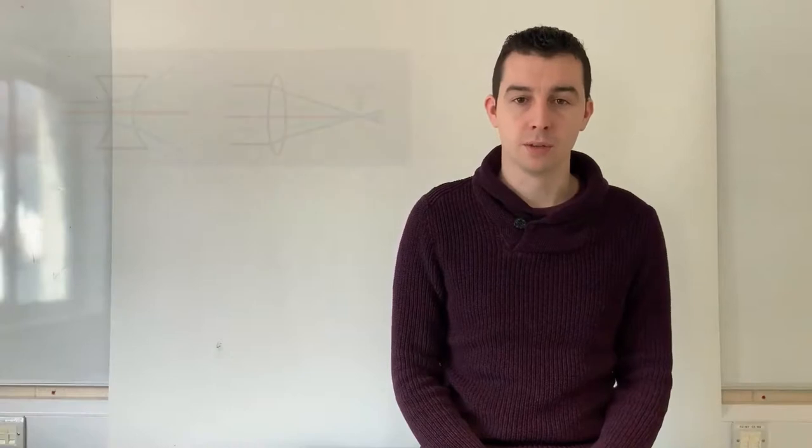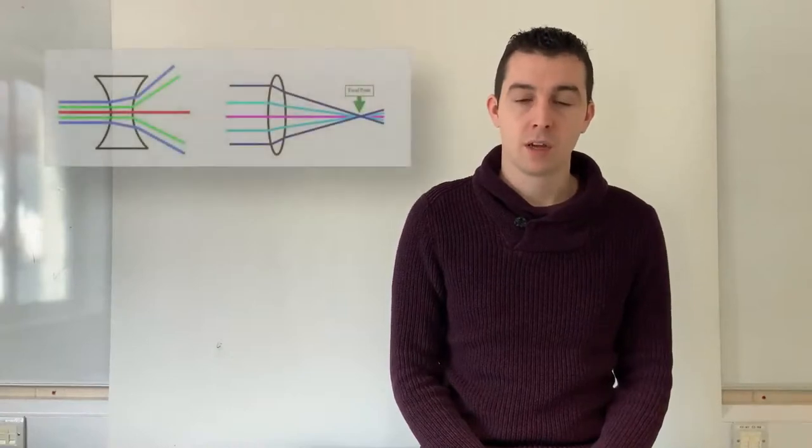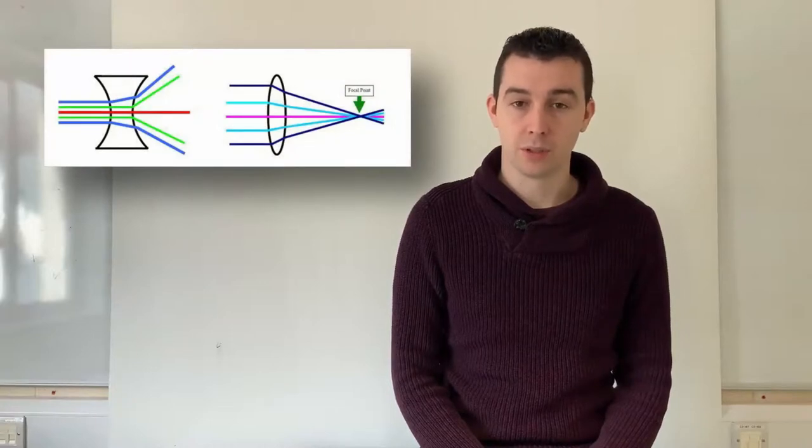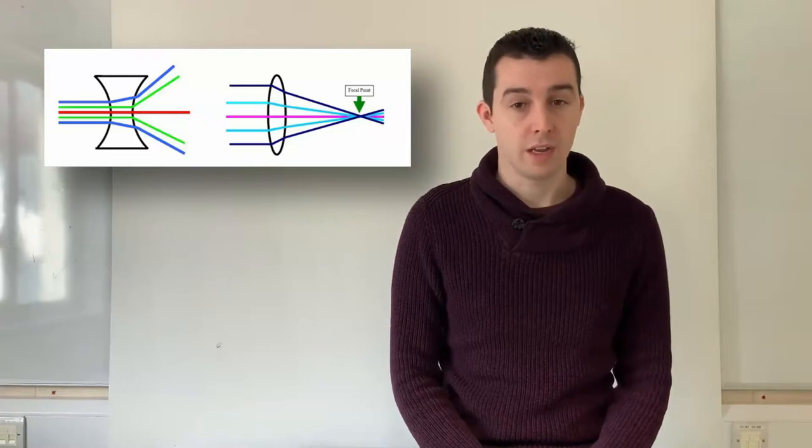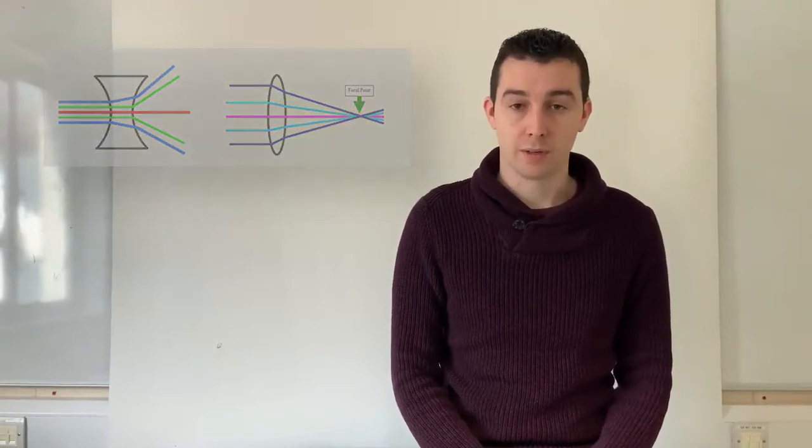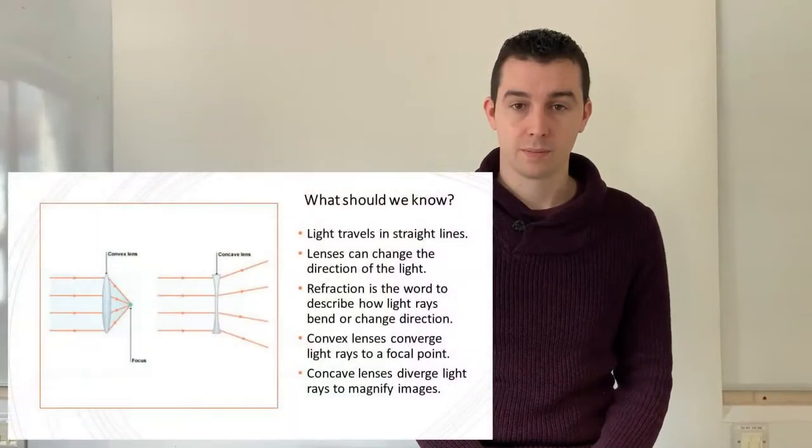In conclusion, convex lenses cause light rays to converge, which means come together at a single point, referred to as the focal point. Whereas concave lenses cause light rays to diverge or spread apart. Here is a summary of what we should know at the end of this lesson.